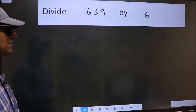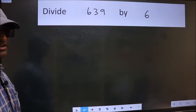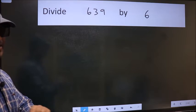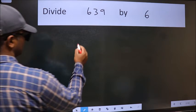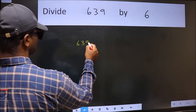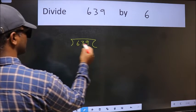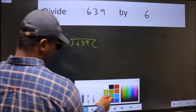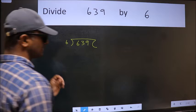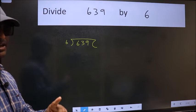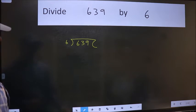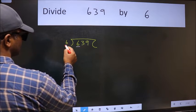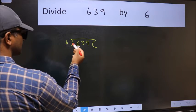Divide 639 by 6. To do this division, we should frame it in this way: 639 here and 6 here. This is your step one. Next, here we have six and six here. When do we get six in the six table?